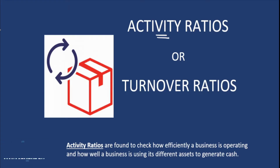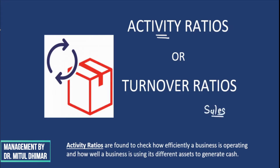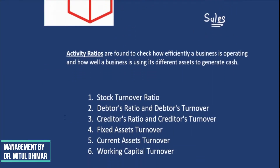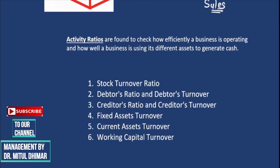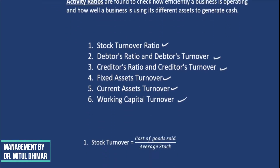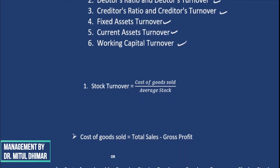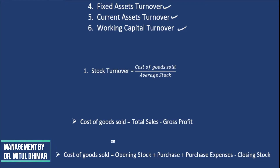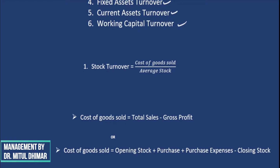Efficiency is checked on the basis of sales — sales is the only proper way of checking efficiency. So the different ratios under this head will have sales used directly or indirectly. The activity ratios we find to check business efficiency are: stock turnover ratio, debtors ratio, debtors turnover, creditors ratio, creditors turnover, fixed assets turnover, current assets turnover, and working capital turnover. The first ratio is stock turnover ratio, which checks how many times our stock is being converted into sales.